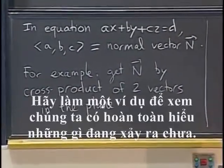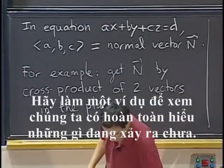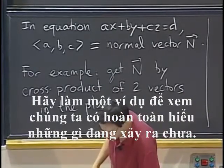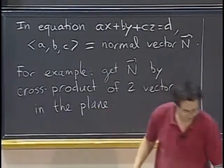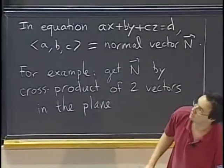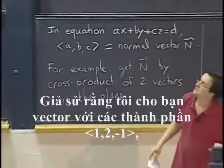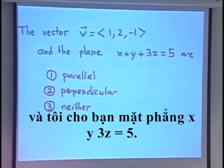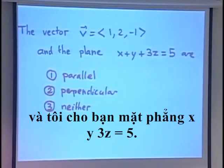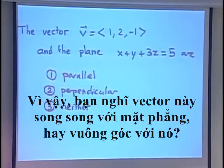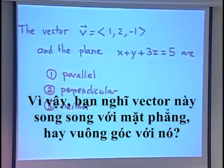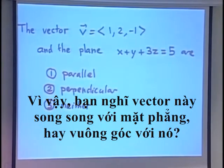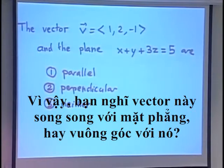So, let's just do an example to completely understand what's going on. Let's say that I give you the vector with components 1, 2, negative 1, and I give you the plane x plus y plus 3z equals 5. Do you think that this vector is parallel to the plane, perpendicular to it?